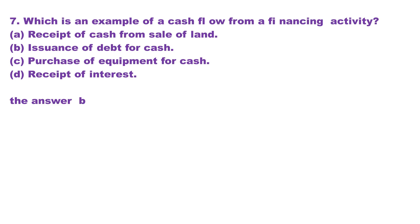Question 7. Which is an example of a cash flow from a financing activity? A. Receipt of cash from sale of land. B. Issuance of debt for cash. C. Purchase of equipment for cash. D. Receipt of interest. The answer is choice B.